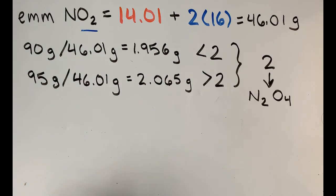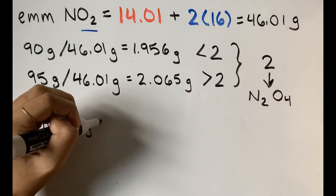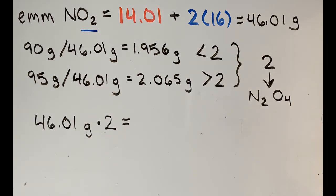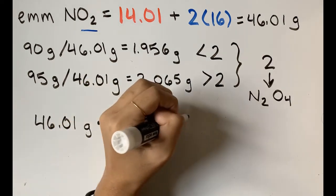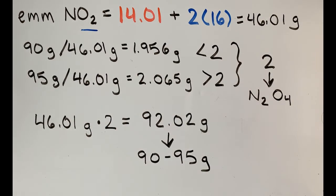Now, if we take the empirical mass that we have, 46.01 grams, and multiply it by 2, we get 92.02 grams. The mass is within the range we were given, so we know we got an accurate answer.